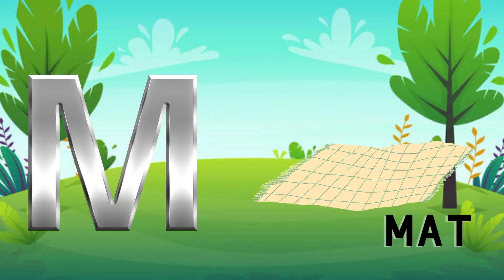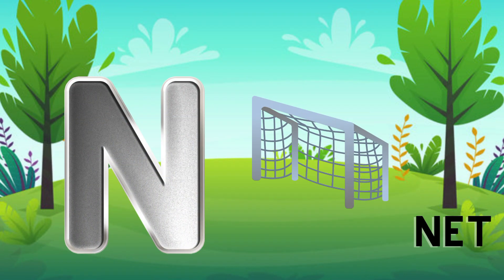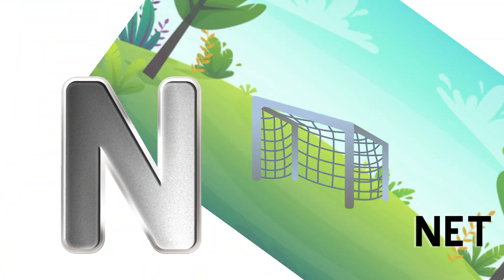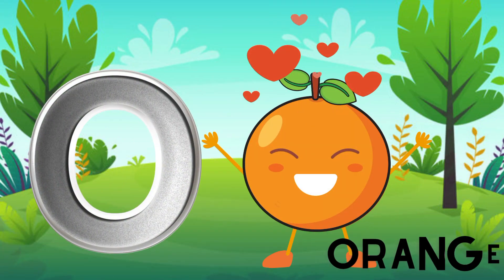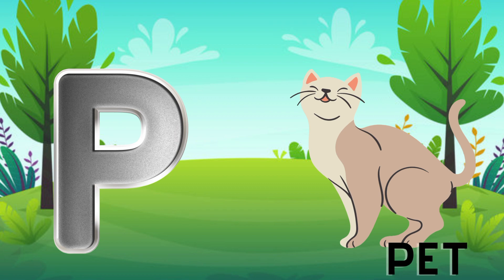M is for mat, m-m-mat. N is for net, n-n-net. O is for orange, o-o-orange. P is for pet, p-p-pet.